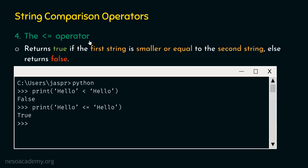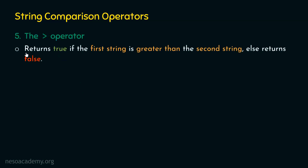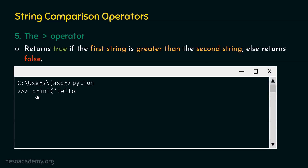The fifth operator is the greater-than operator (>). It returns true if the first string is greater than the second string, else returns false — just the opposite of the less-than operator. For example, print('Hello' > 'hello') returns false because capital H is actually less than small h, not greater. If we switch the two strings, we would get true as a result.